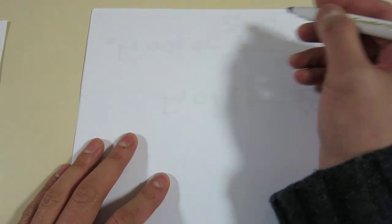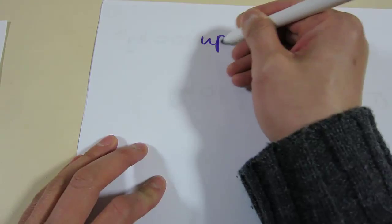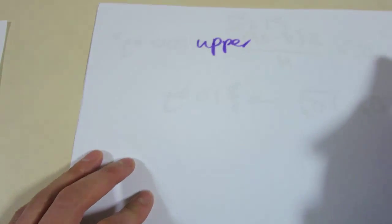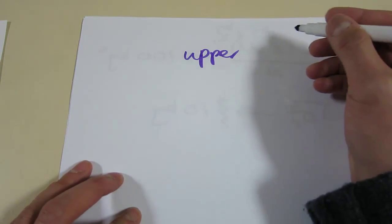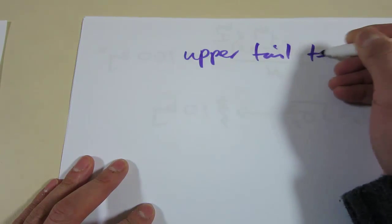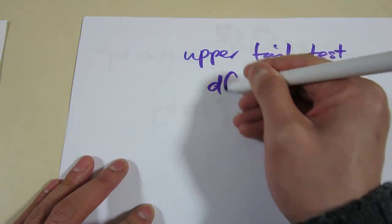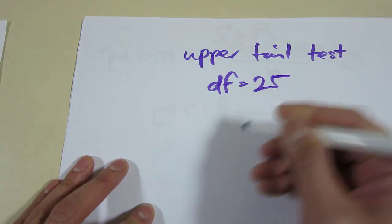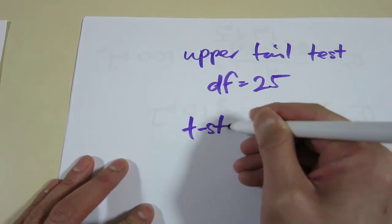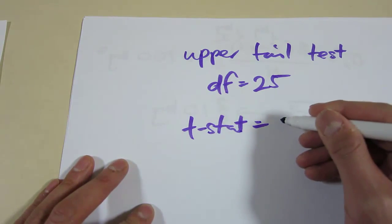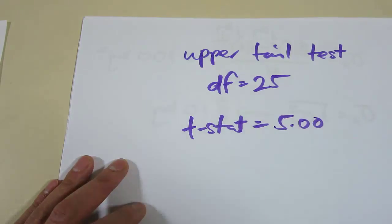Finally, what happens if we have a crazily large or crazily small t-statistic? Let's assume an upper-tailed test. That's a simple example, degrees of freedom equals 25 and let's say our t-stat equals to something massive, 5.